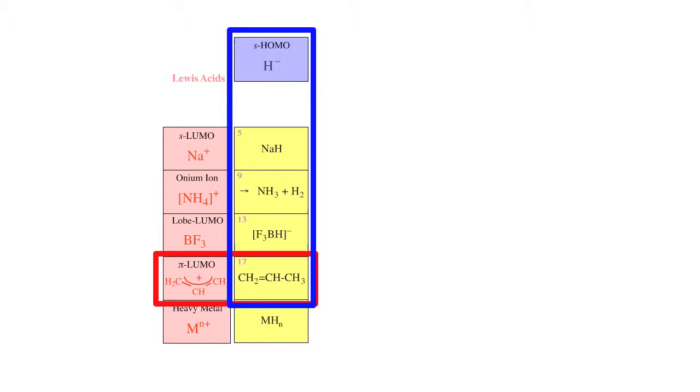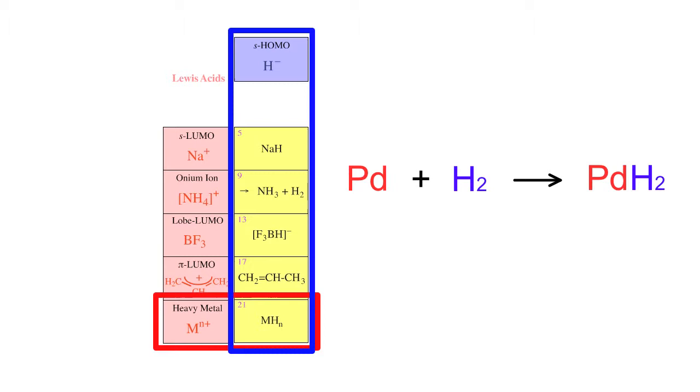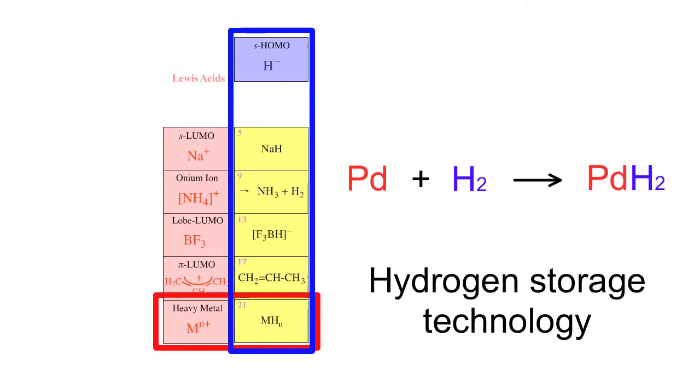Pi-LUMO Lewis acids such as the allyl cation react with hydride ion to give the corresponding alkene. Heavy metal Lewis acids such as palladium react with hydrogen to give palladium hydride. This type of chemistry is being looked at for hydrogen storage.